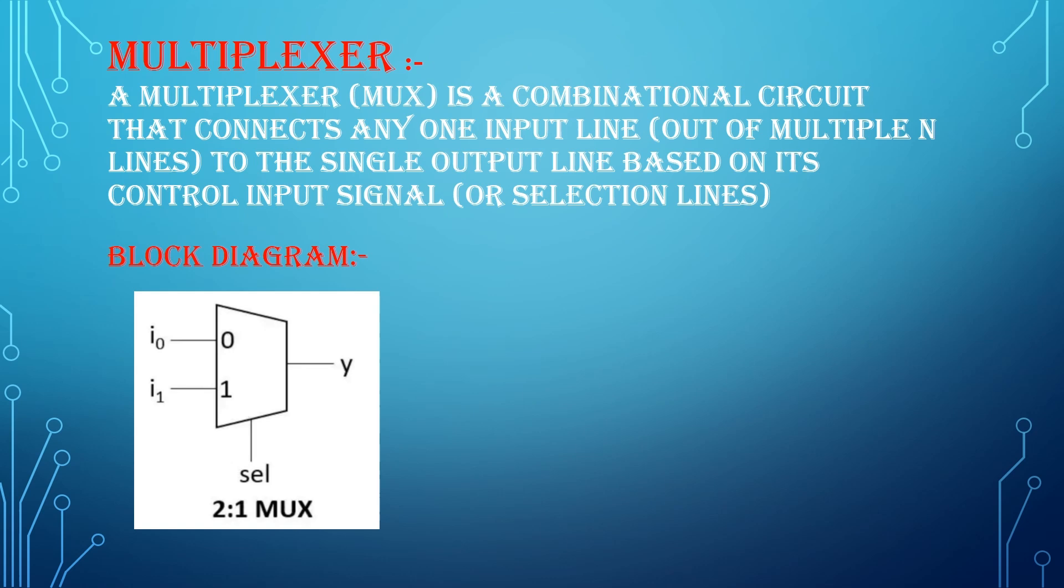Now let's see what is multiplexer. A multiplexer is a combinational circuit that connects any one input line to the output based on the selection line. Usually for n selection lines, there are 2 power n input lines.